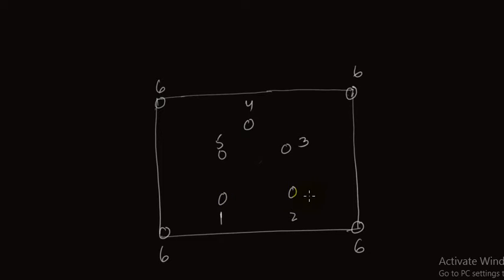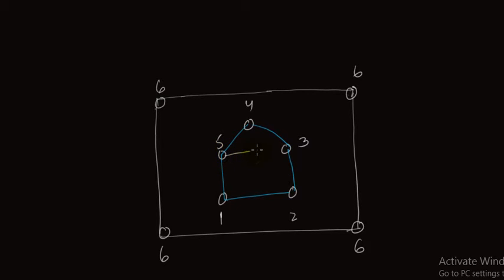So we have taken 6 vertices. Now we join all possible edges in such a way that edge crossing is not allowed. First we join 1 and 2, 2 and 3, 4 and 5, 4 and 3, 1 and 5.